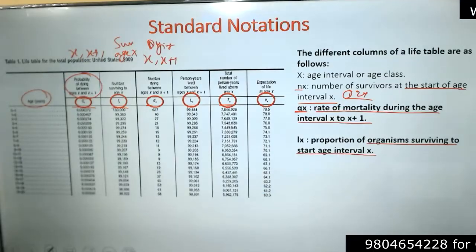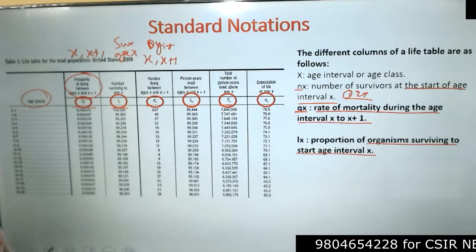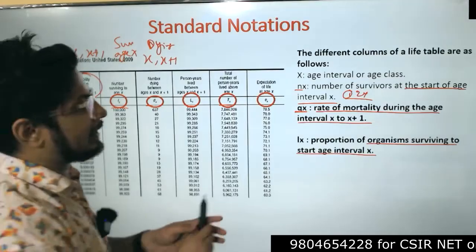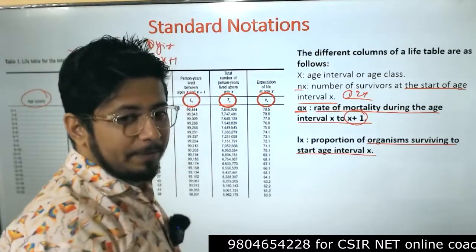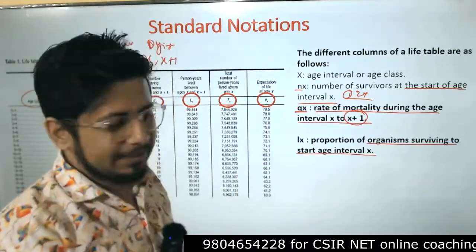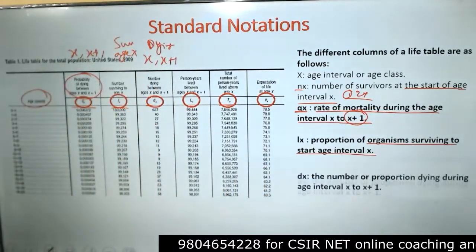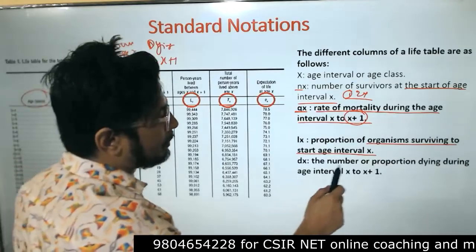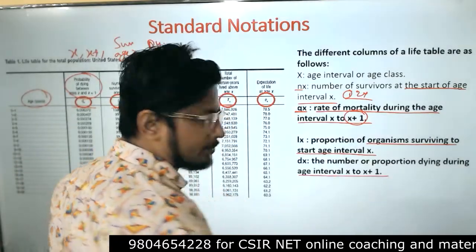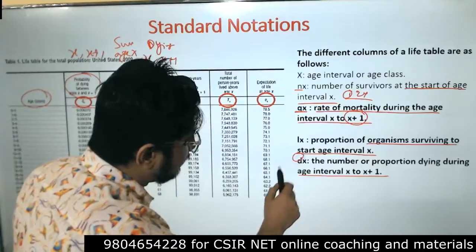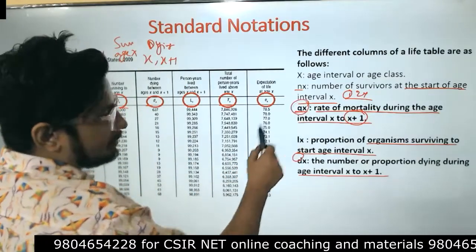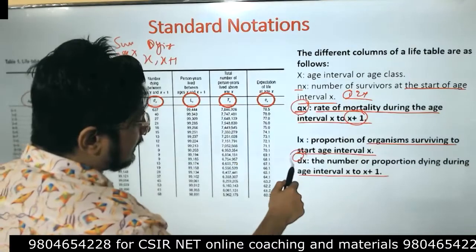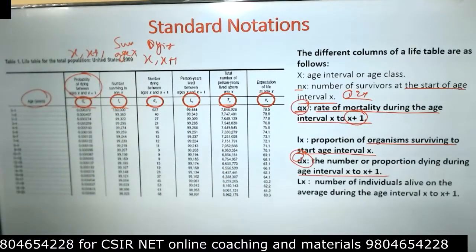lx is the proportion of organisms surviving to the start of age interval x. If you started with 10, we know the survival probability between 10 and 11, but lx tells us what proportion survived to reach age 10 in the first place. dx is the number or proportion dying during age interval x to x+1 — 'd' for death. So qx is the rate between x and x+1, and dx is the death count within x and x+1.